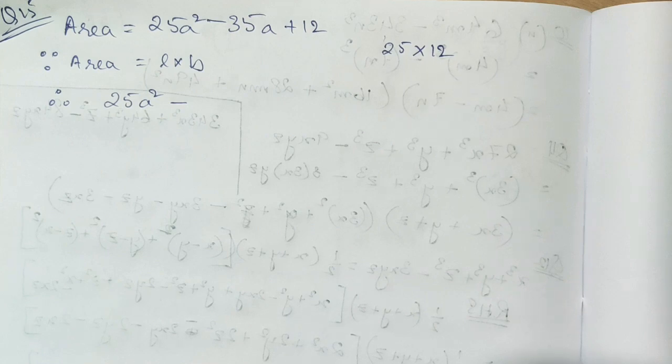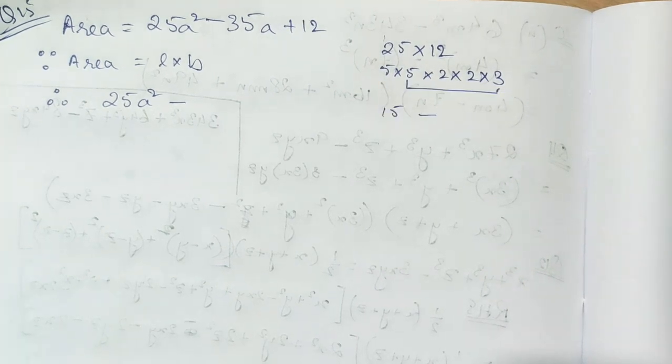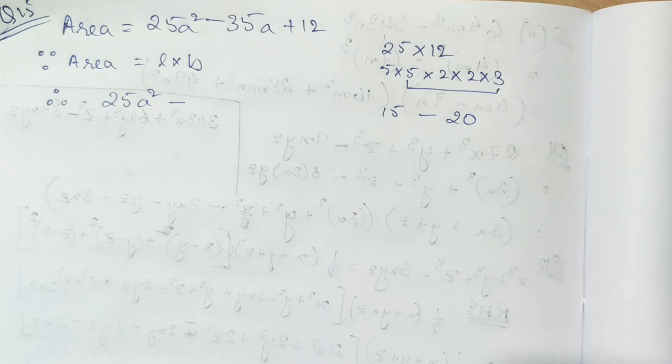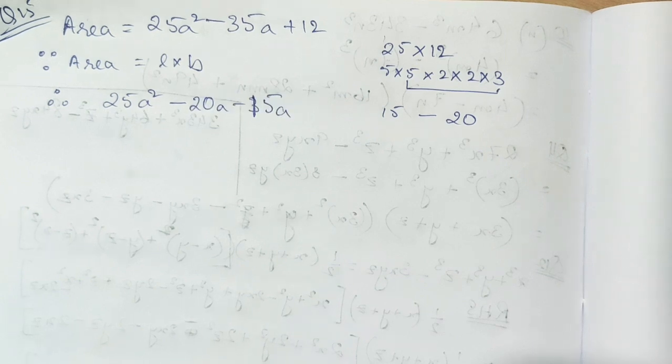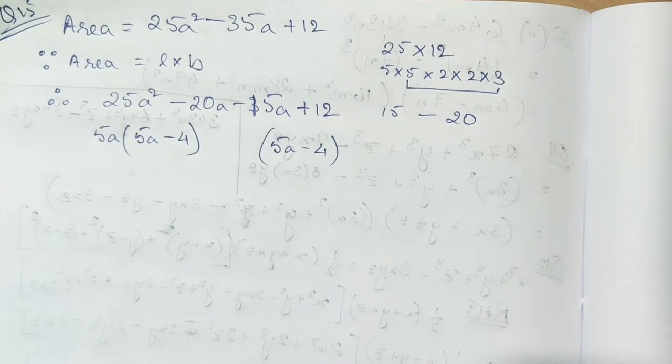See students, in this type of question we need two numbers such that their product is 25 into 12 and their sum or difference is minus 35. So I will go with the prime factors here, where three fives are 15 and four fives are 20. This two into two into five is 20, so these are the two numbers we can take because by adding them we get minus 35.